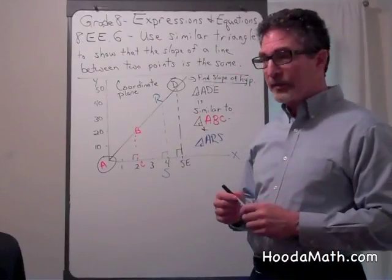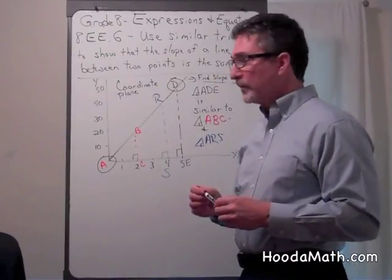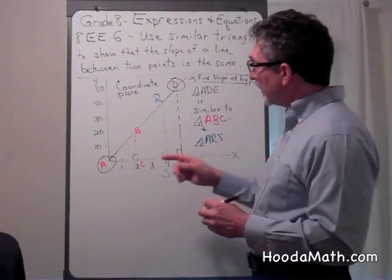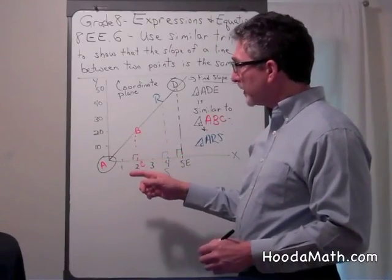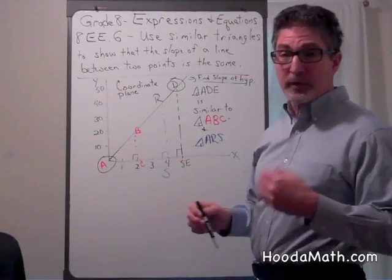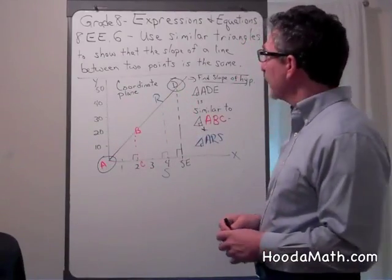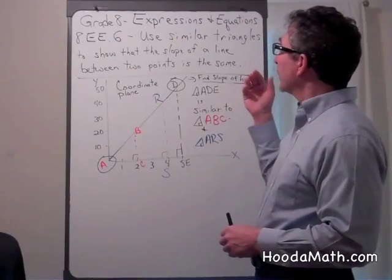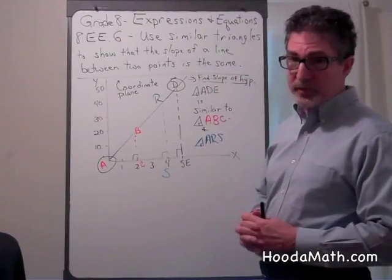In this lesson I'm going to show you that a line formed on a coordinate plane between two distinct points always has the same slope. I'm going to use similar triangles to show this.